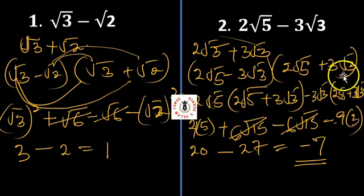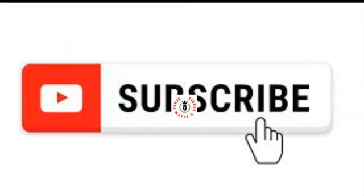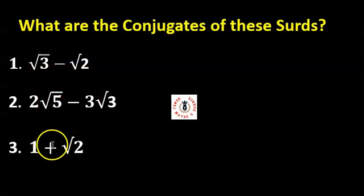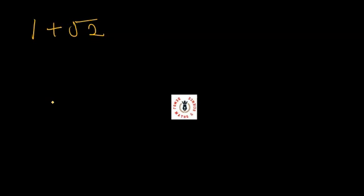Let's look at our third question. The third question says 1 plus √2. We're going to find the conjugate of (1 + √2). I'll give you some minutes — I'd like you to pause this video and try this on your own. The conjugate of this surd is 1 minus √2.